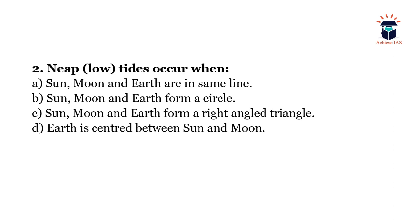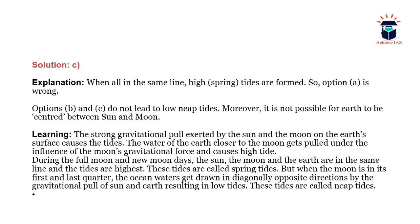When all three are in the same line, high tides — that is spring tides — are formed, so option A is wrong. The strong gravitational pull exerted by the sun and moon on the earth's surface causes tides. The water of the earth closer to the moon gets pulled under the influence of the moon's gravitational force and causes high tide. During full moon and new moon days, the sun, moon and earth are in the same line and tides are highest — these are called spring tides.